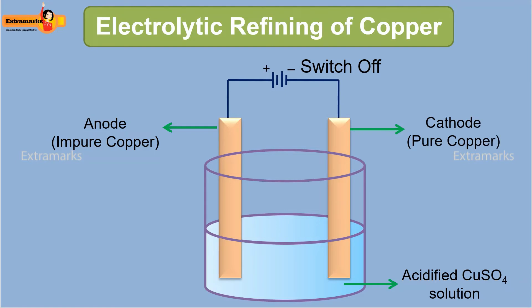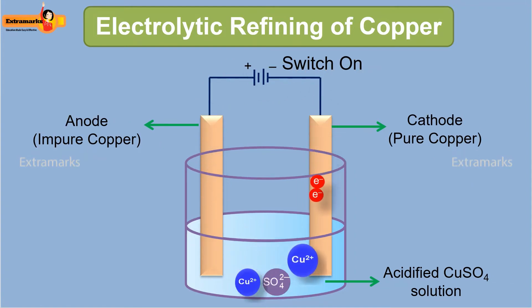A thin strip of pure copper is connected to the negative terminal of the battery and it serves as the cathode. An impure block of copper is connected to the positive terminal of the battery and it serves as the anode. When an electric current is passed through the solution, the impure copper at the anode dissolves into the copper sulfate solution. At the same time, pure copper gets deposited on the cathode.